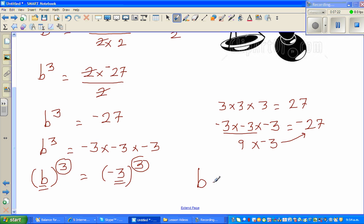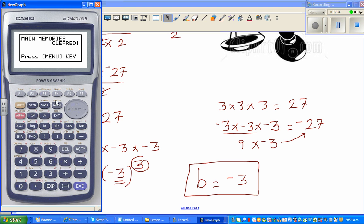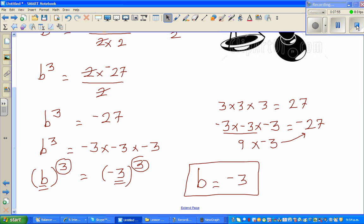So the answer is b is equal to minus 3 or negative 3. And you can confirm this on a calculator. So this is my calculator, minus 3 times minus 3 times minus 3 is minus 27. Or you can also go minus 3 in the bracket, you have to put this in the bracket, raise to 3 is also minus 27. Hopefully these videos have been helpful, see you in the next video.